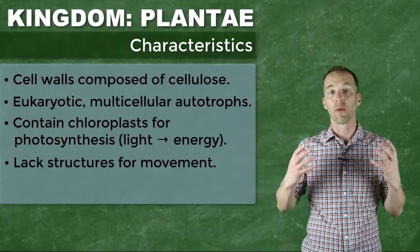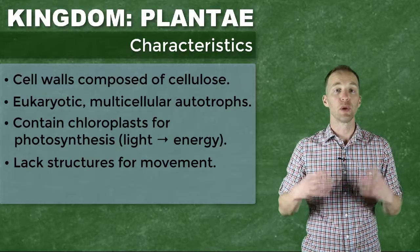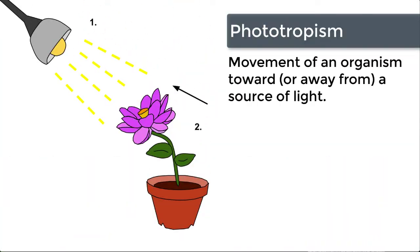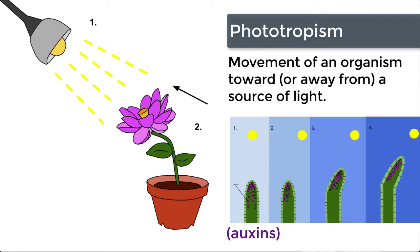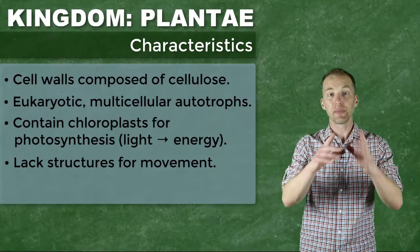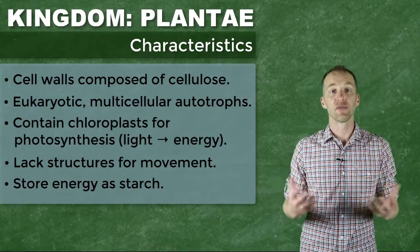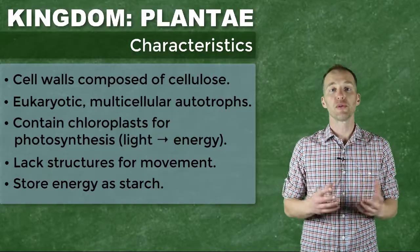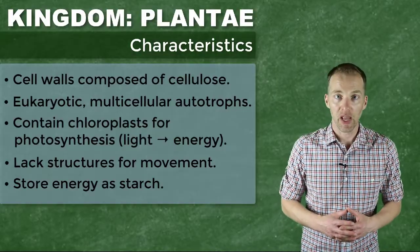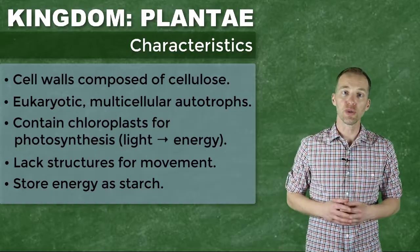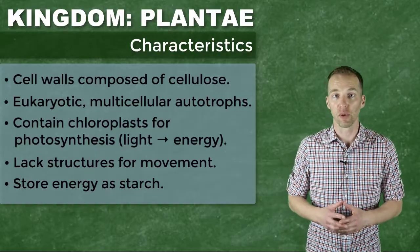Plants position themselves to be exposed to the most sunlight. We also have this phenomenon referred to as phototropism, where chemical compounds called auxins allow the plant to orient itself in such a way that it appears as if the plant is turning or moving towards the source of the sun. Plants take that inorganic source of energy — the sun's light — and convert it into a form of energy that can be stored. We refer to this storage carbohydrate as starch.